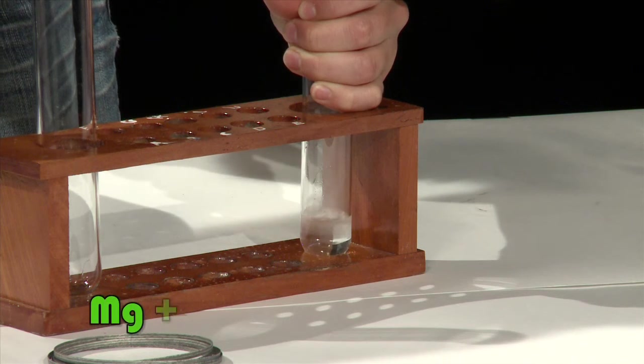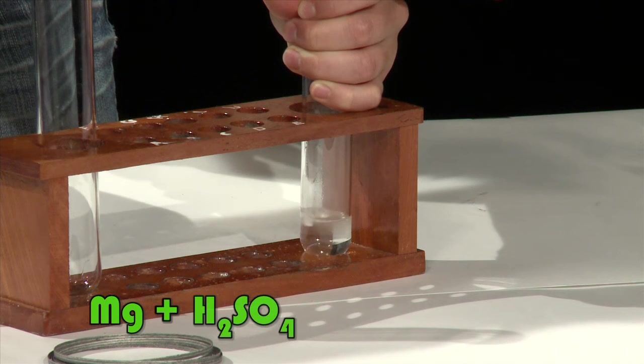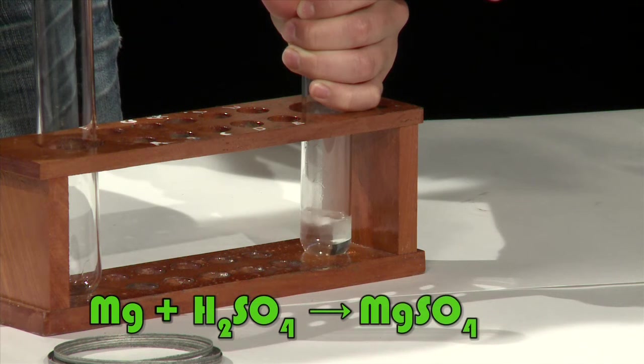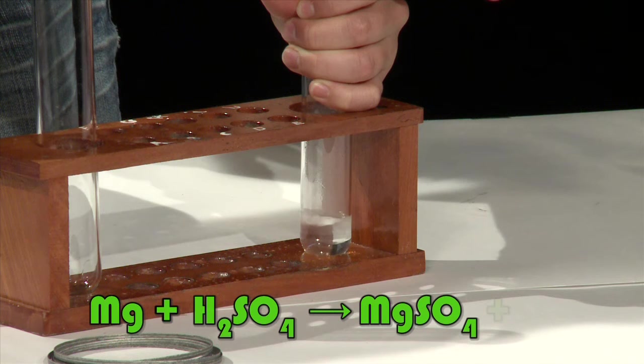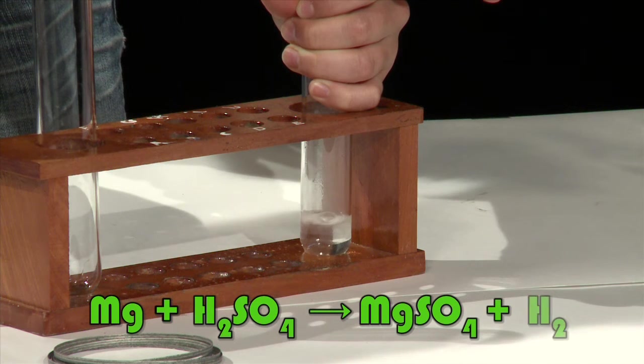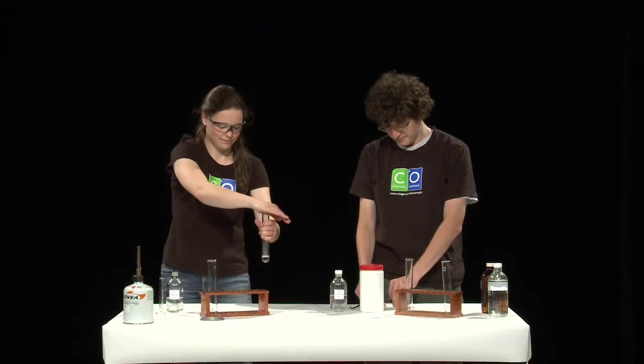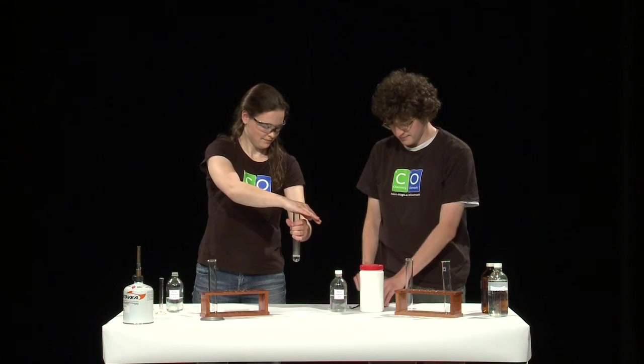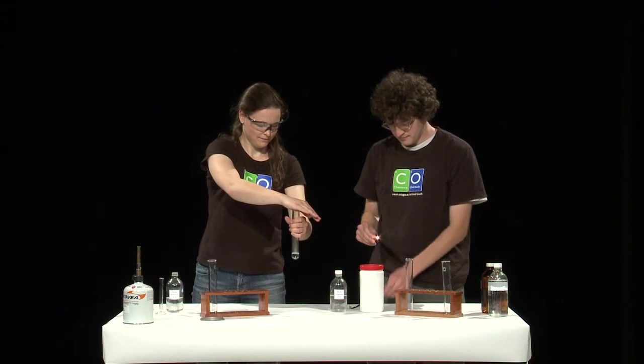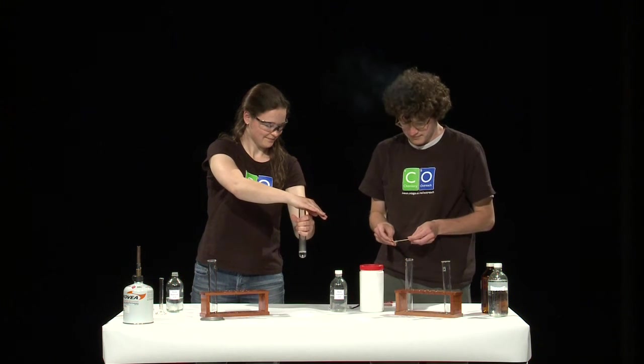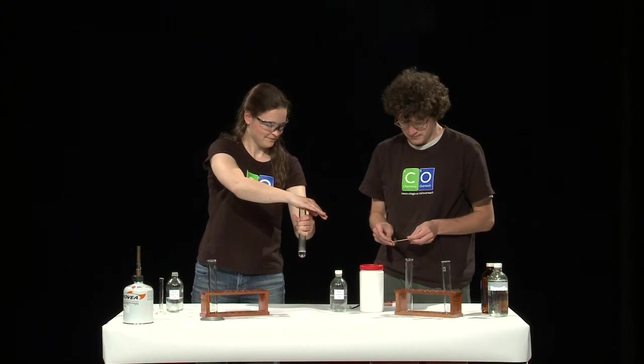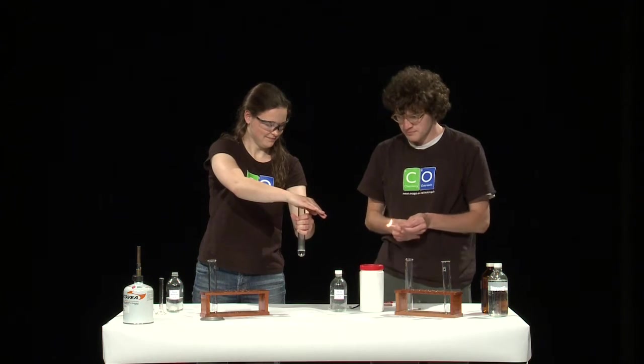The magnesium is being dissolved by the sulfuric acid to form a solution of magnesium sulfate. The bubbling you can see is due to hydrogen gas being given off from the sulfuric acid. You can test for hydrogen gas by holding a burning splint over the top of the boiling tube. Since hydrogen gas is explosive, you should hear a nice pop sound.